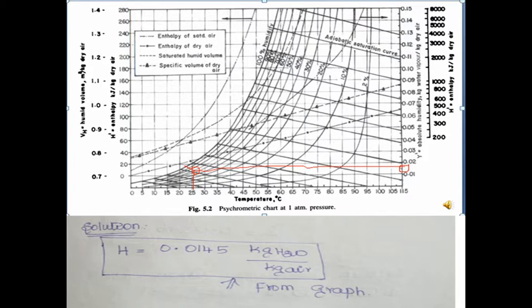First, determine absolute humidity. To read the absolute humidity value from the psychrometric chart, we need two values: DBT and WBT — 25 degrees Celsius and 22 degrees Celsius respectively. First step: draw a vertical line at 25 degrees Celsius from the DBT axis. The red colored vertical line in the figure indicates the DBT line. Second step: draw the line of 22 degrees Celsius from the WBT axis.